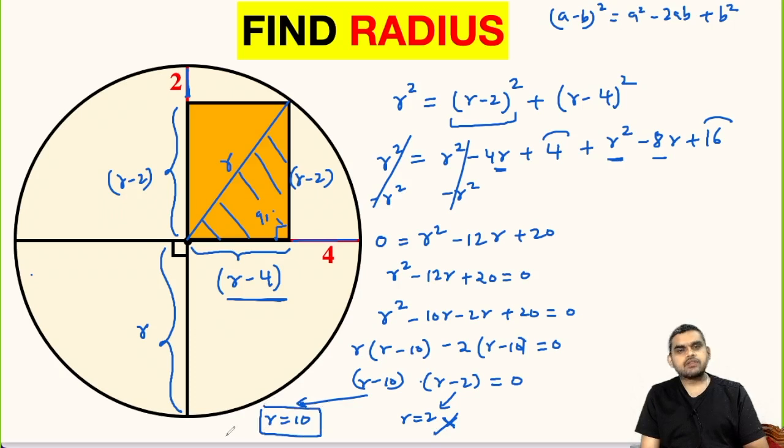We will accept r is equal to 10. So the radius of this circle is 10 units.